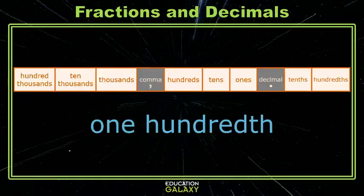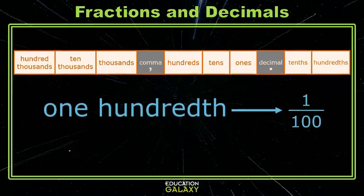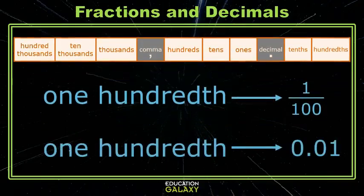We can write that out, one-hundredth. We can write it as a fraction, one over a hundred. And we can write it as a decimal by putting a one in the hundredths place. We have no tenths, so we need that placeholder zero. And then a decimal to separate the tenths from the ones.